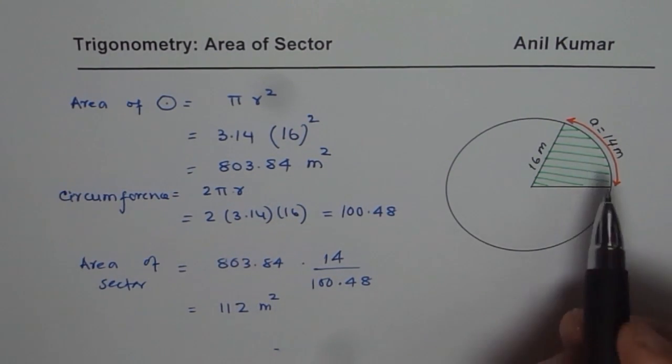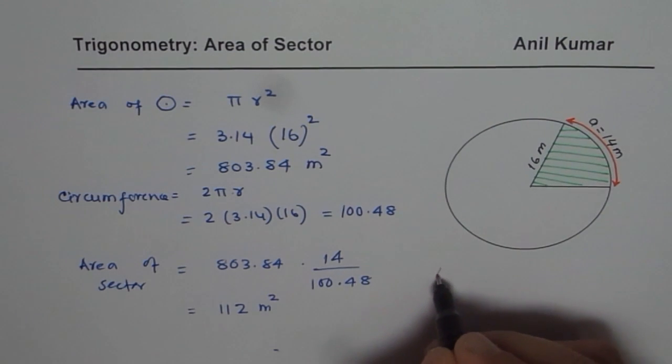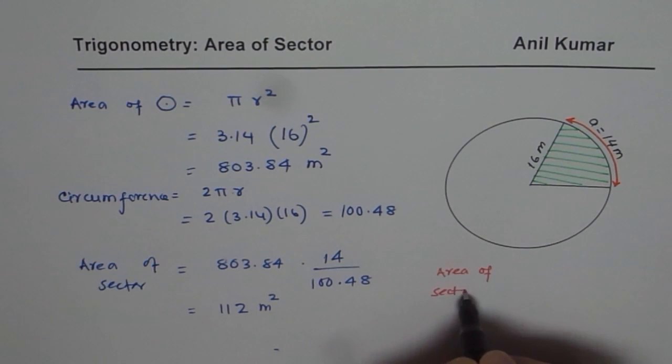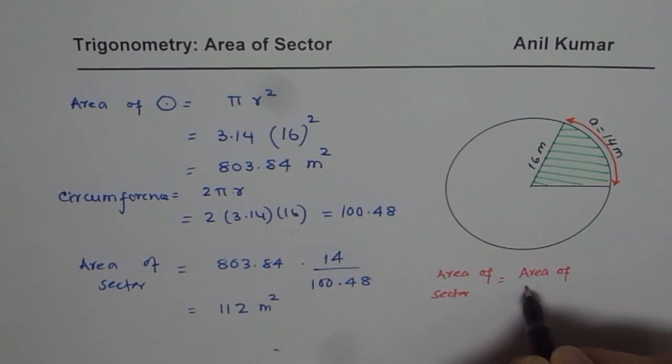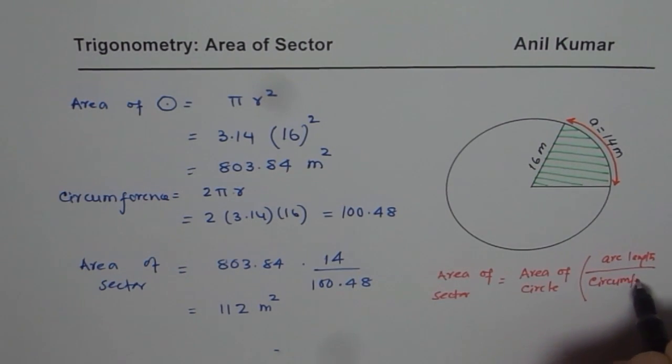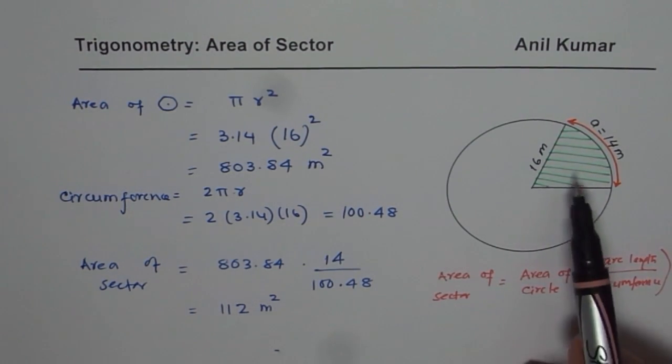So remember whenever you are given the arc length, area of sector should equal, let me write down a formula: area of sector equals area of circle times arc length divided by circumference. So that ratio will give you area of the sector.